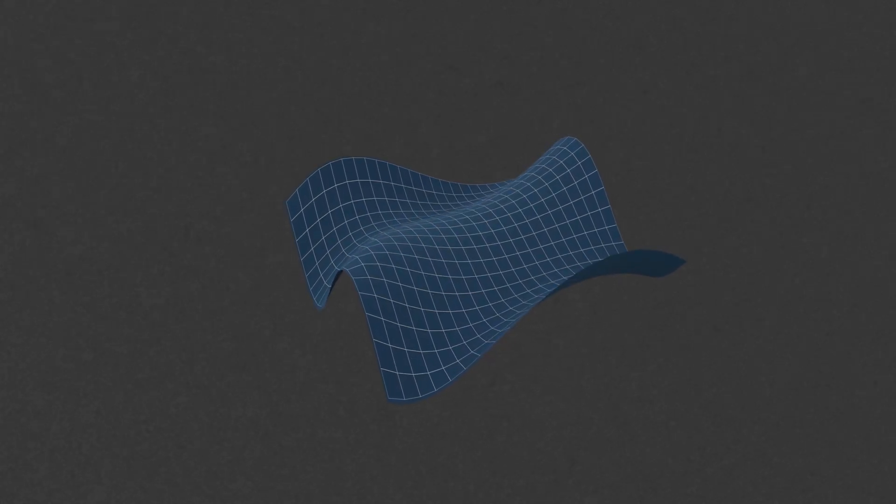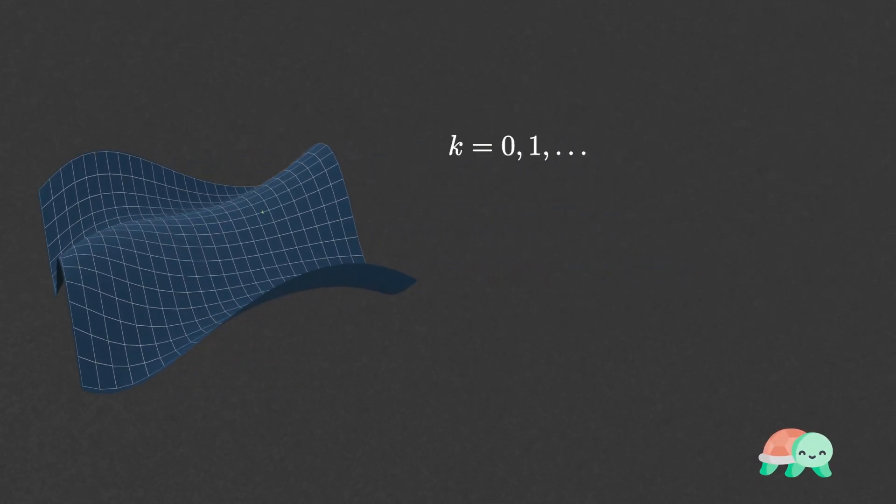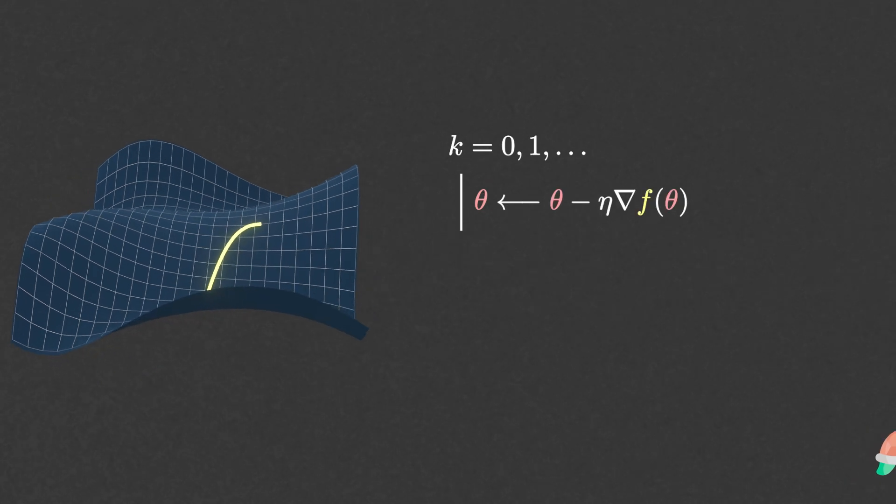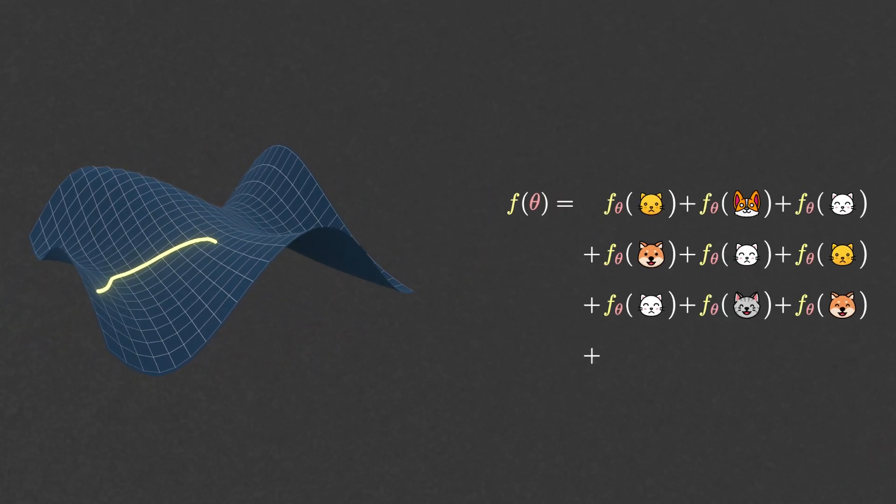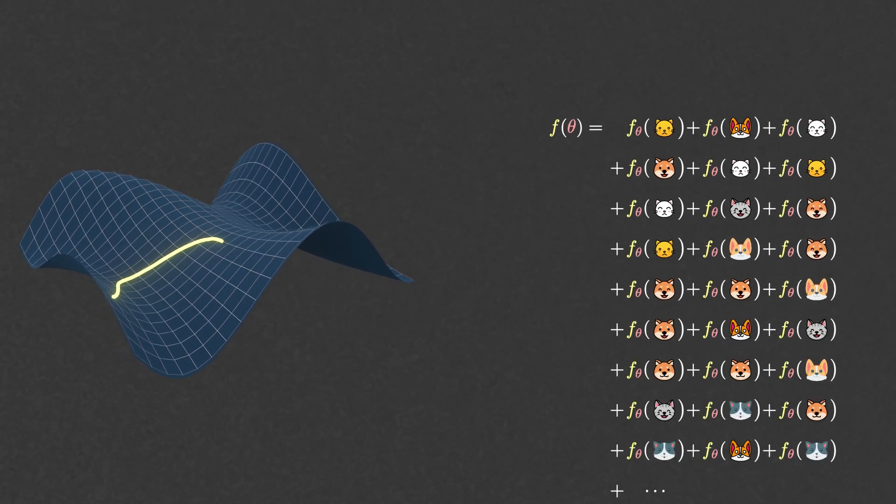A big problem with gradient descent in machine learning is that it is slow. At each iteration, you need to compute the gradient of a loss function that has as many terms as samples in your training dataset. Think millions or even billions of terms.